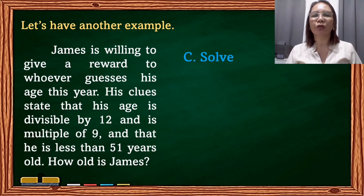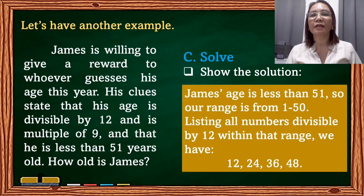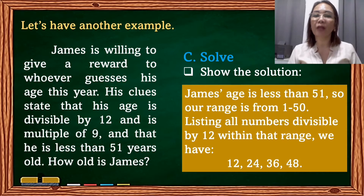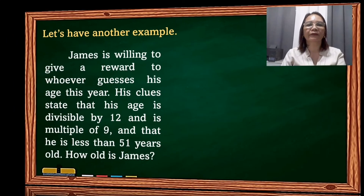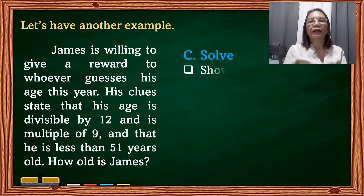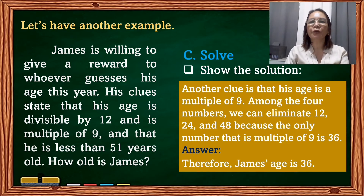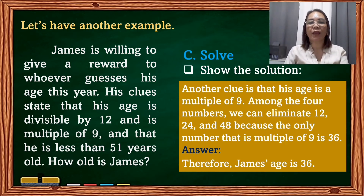After planning, we solve. James's age is less than 51, so our range is from 1 to 50. Listing all numbers divisible by 12 within that range: 12, 24, 36, and 48. The other clue is that his age is a multiple of 9. Among those four numbers, we can eliminate 12, 24, and 48 because the only number that is also a multiple of 9 is 36. Therefore, James's age is 36.